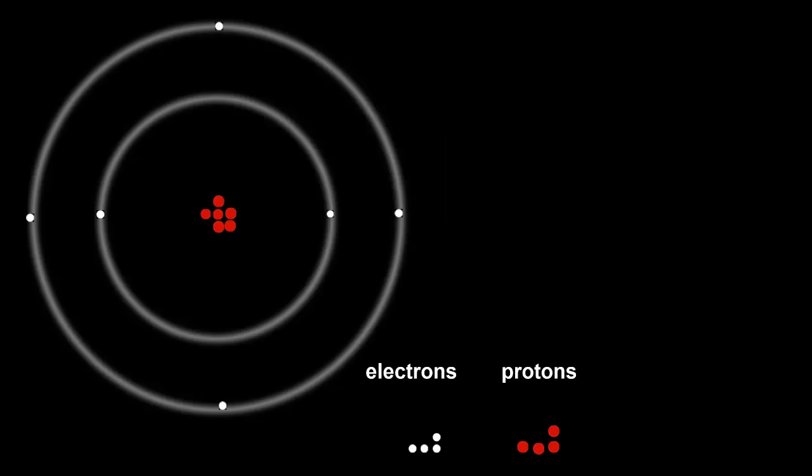Let's use up the rest of our protons and electrons. Number seven, nitrogen. Seven protons and seven electrons. Electron configuration, two, five. Two electrons in the first shell, and five in the second shell.